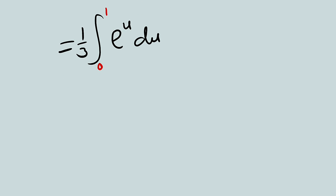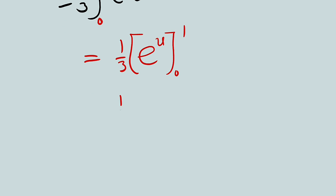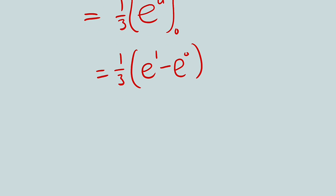Let's integrate. This is equal to 1 over 3. If you integrate e to the u du, it remains e to the u, with limits from 0 to 1. Substituting: we have 1 over 3 times e to the 1 minus e to the 0. e to the 0 is 1, and e to the 1 is e. So this is the same as e minus 1, divided by 3.